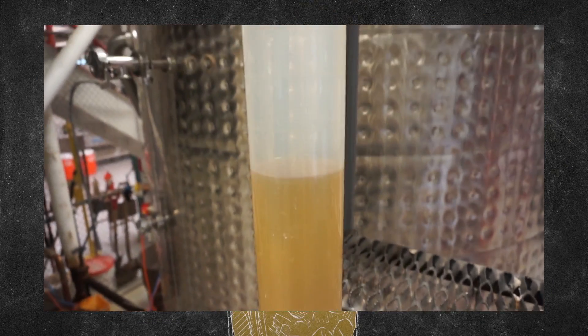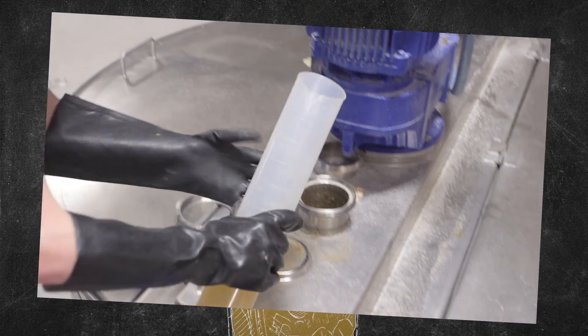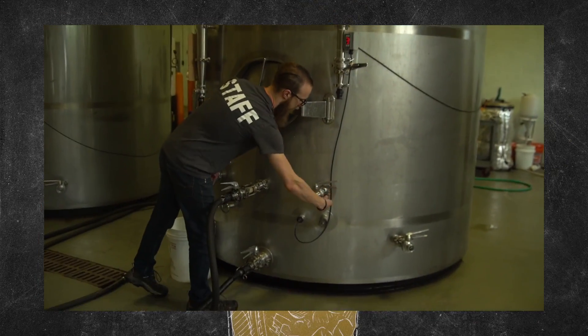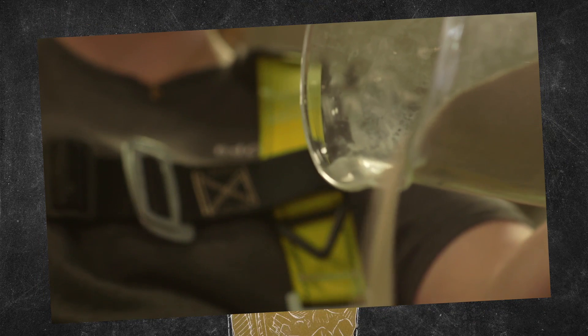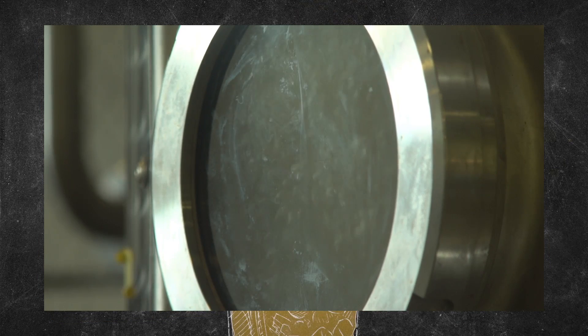Add enzymes and the starch in the corn breaks down into sugar. Move the mash into the fermenting tank. Add yeast. That reacts with the sugar making carbon dioxide and ethanol.